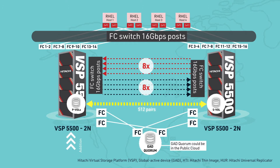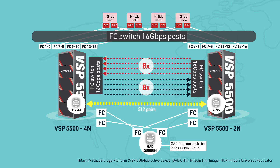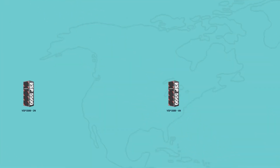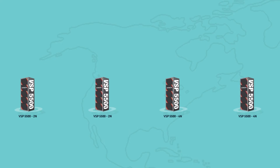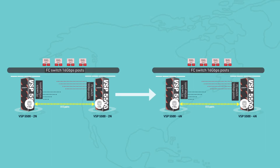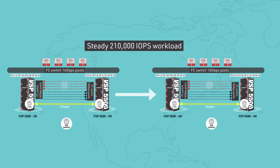In the procedure, the primary VSP5500 that was receiving the host IOs was upgraded from two nodes to four nodes. With the scale-out of the secondary VSP, the procedure was complete. Here is the configuration after we upgraded both the primary and secondary VSPs. During the upgrade procedure, the 512 GAD pairs remained in pair state doing replication with the primary VSP5500 volumes uninterruptedly receiving host IOs from an application running at a steady rate of 210,000 IOPS.